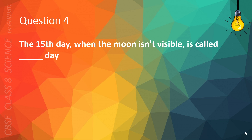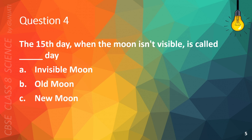Question 4. The 15th day when the Moon isn't visible is called blank day. A. Invisible Moon, B. Old Moon, C. New Moon, or D. No Moon. The correct answer is C. New Moon.